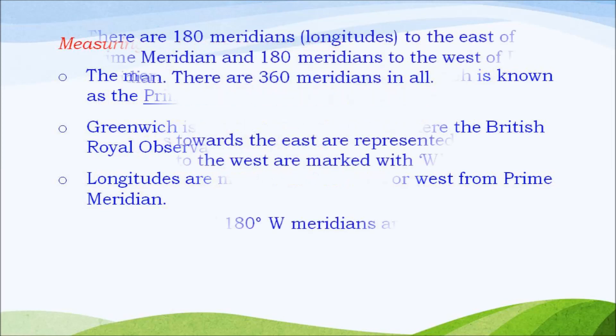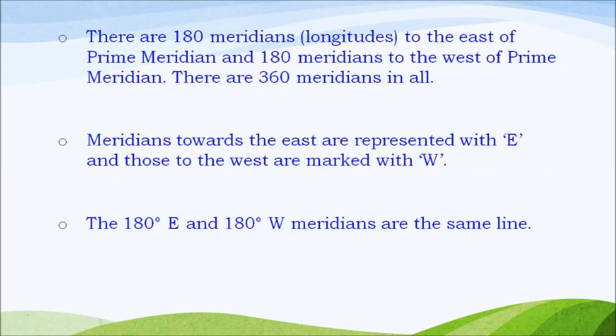There are 360 longitudes in all. Meridians towards the east are represented with E and those to the west are marked with W.